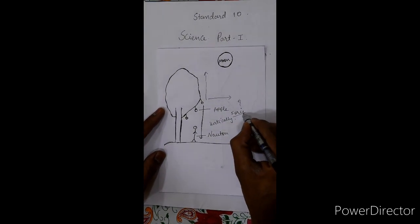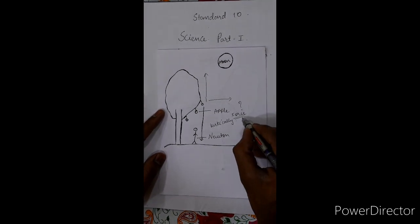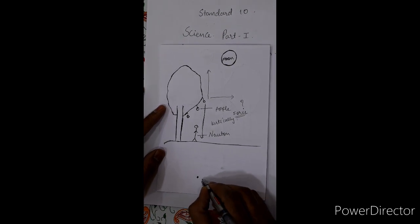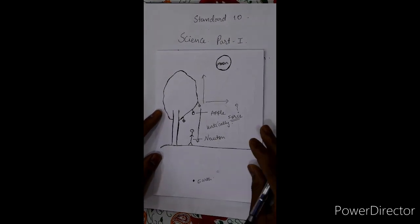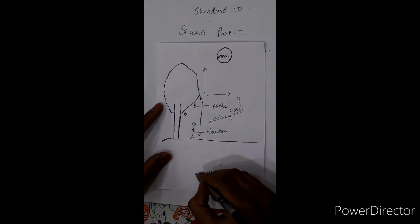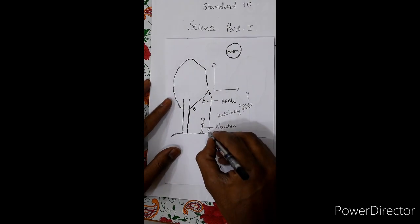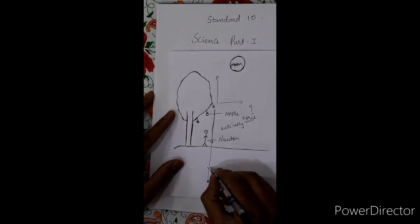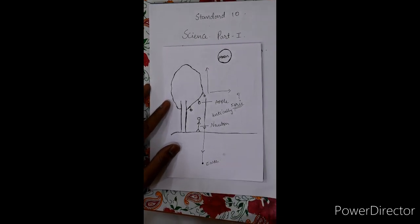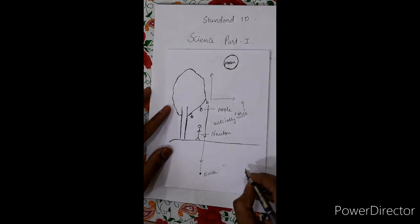One force might be there which is acting on the apple. But the question again comes — from where might this force be coming? This force is coming from the center of the earth. So earth exerts a force on the apple, and this force is acting in the downward direction, coming from the center of the earth. Because of this force, the apple fell on the earth's surface.